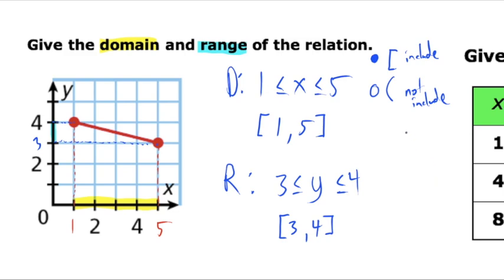You can also have a combination of hard and soft brackets — for example, something like (3, 4], meaning at 3 we had an open circle and at 4 we had a closed circle. What's nice about bracket notation is you don't have to worry about making sure your inequalities are going in the right direction or putting x or y in the middle — it's just the hard or soft bracket you have to worry about.